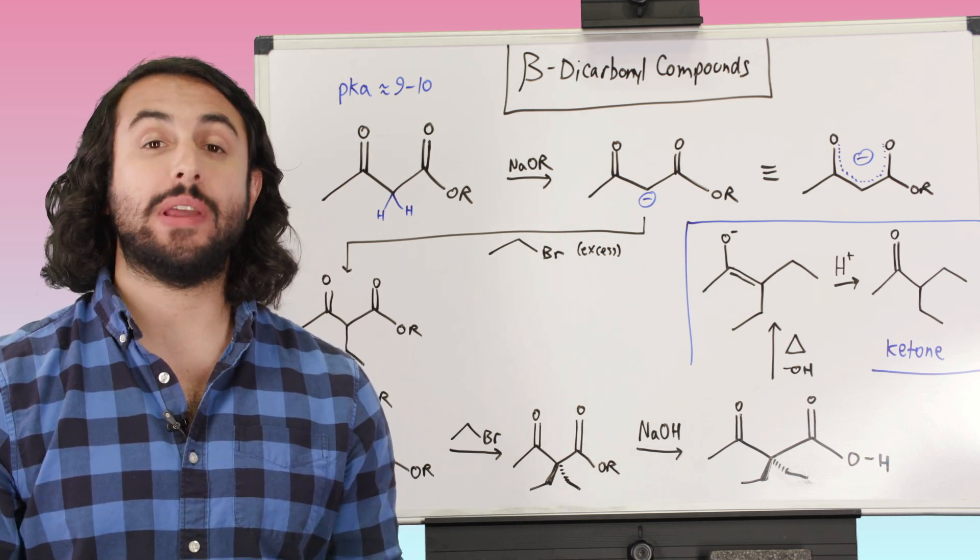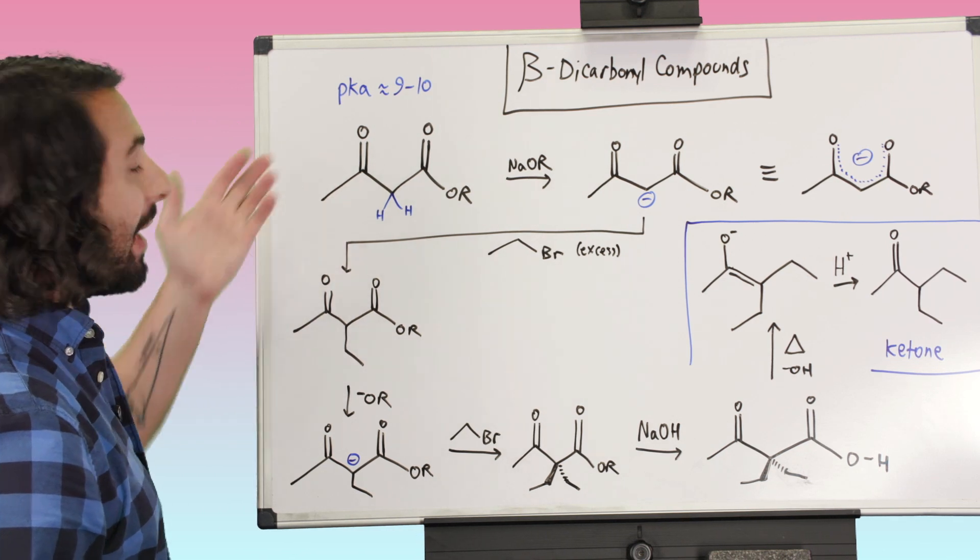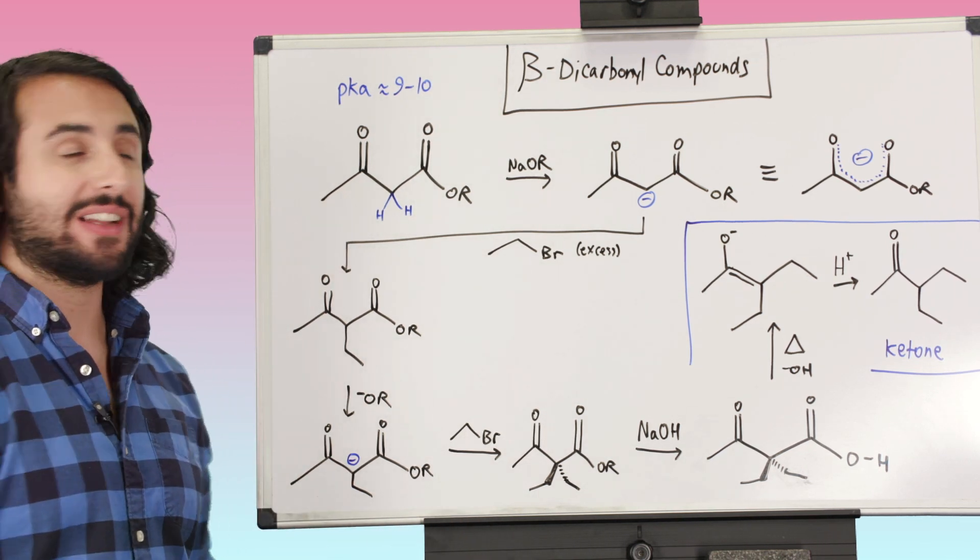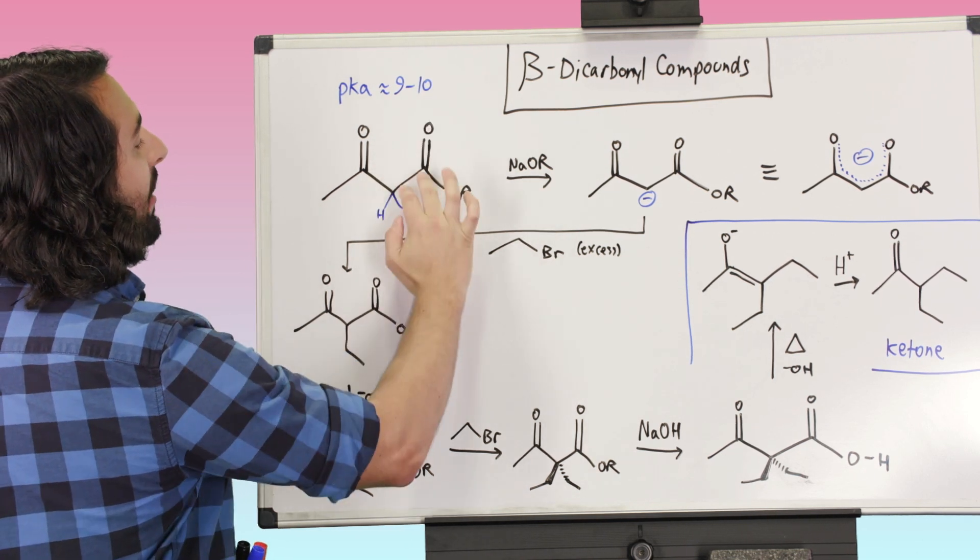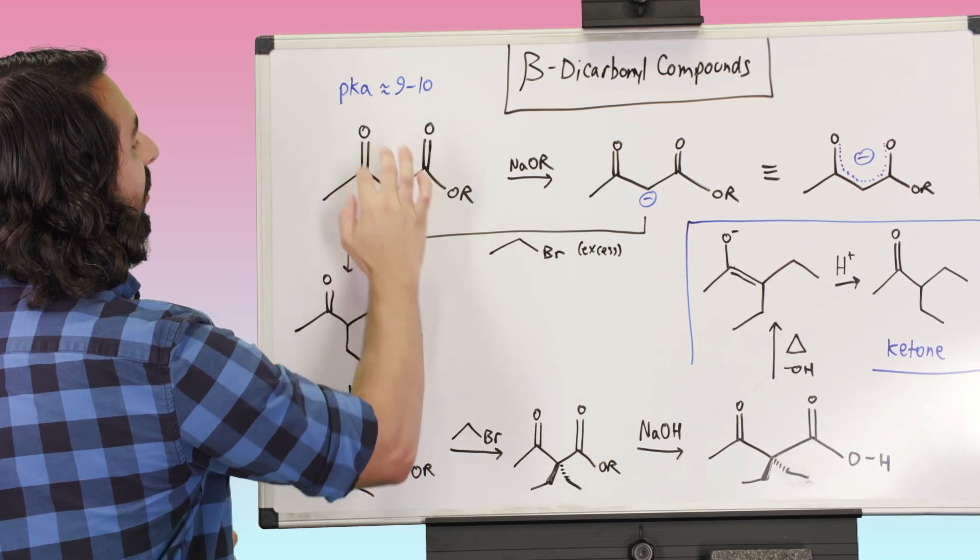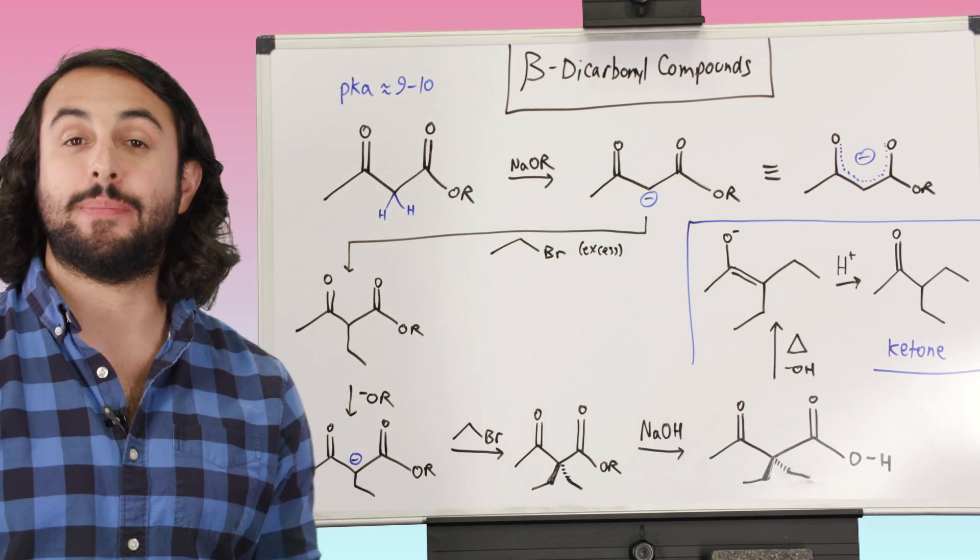So let's look at some things that we can do with beta-dicarbonyl compounds. Here is one of them, and we can imagine that we produce this from a Claisen condensation, say from a two-carbon ester. This two-carbon ester right here could have attacked this one, this would have been the new bond, and then we would have this beta-dicarbonyl compound.